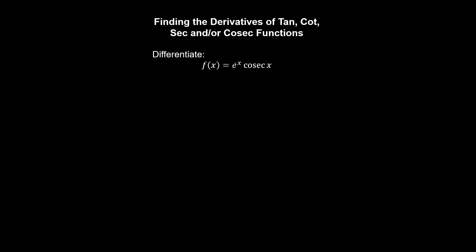Let's evaluate the derivative of this product of two functions. Now we could rewrite this as e to the x on sin(x) and use the quotient rule, or simply remember the derivative of cosec(x) and use the product rule. So we keep e to the x constant, and the derivative of cosec(x) is minus cosec(x) by the cotangent of x, as we've seen previously.